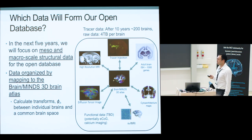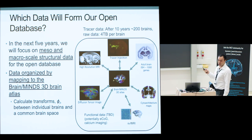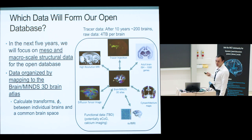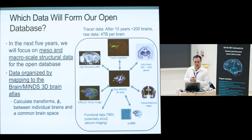You can see that it's taking up a lot of space. In the next five years we plan to get adult brain ISH for around 1,000 genes, and high-resolution MRI with a 9.4 Tesla MRI system, along with diffusion weighted imaging for all brains that have tracer injections, cytoarchitectonic maps for a number of brains, resting state fMRI, and functional data — though it's not yet decided which data will be included.